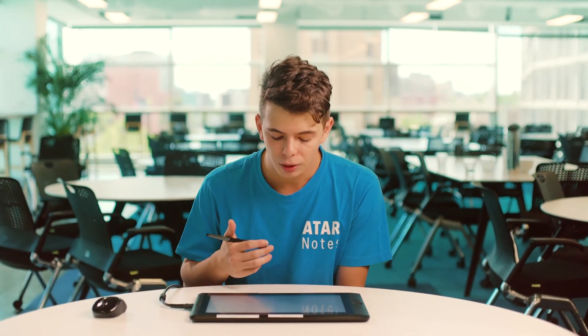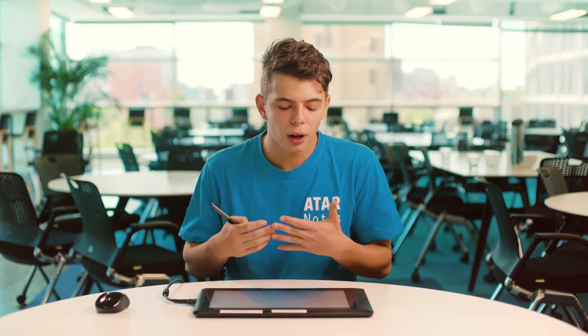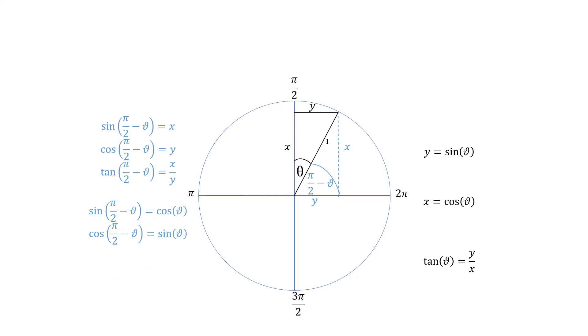So we're basically using what we found earlier and rearranging it, shifting our triangle and finding out what sine of π/2 minus theta is and cos and tan as well. So finally tan is going to be cos of theta on sine of theta. So that's pretty much how we find our complementary angles.